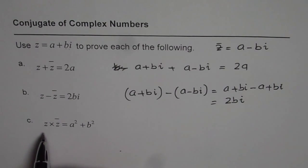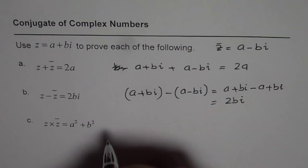The last one here is the product of the complex number and its conjugate. It is always equal to a square plus b square. Let us prove it.